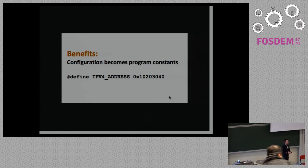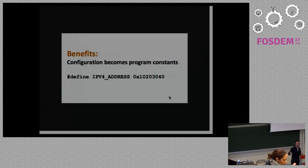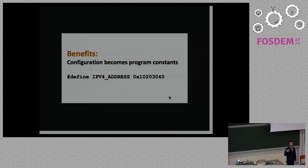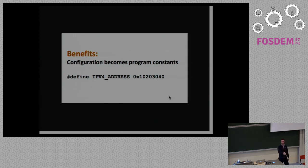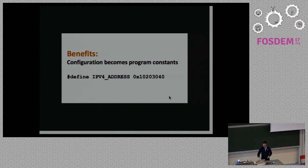If you can generate a program, you can turn a lot of configuration into constants. Things like the container's MAC address, task MAC address, or IP address all become constants in the program and the compiler can optimize them. Literally, an IPv4 address will just be loaded into a register before it's written into the packet — there's no cache miss looking up the container's IP. It's in the program; the compiler can optimize it heavily.